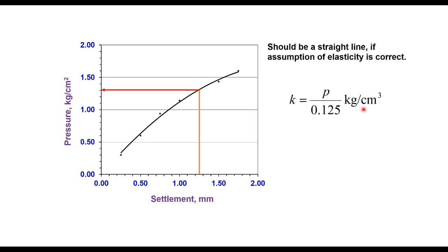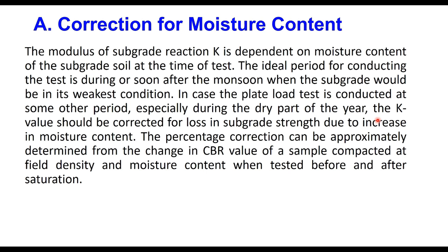Then we calculate the value of k using this equation: pressure divided by 0.125, in kg per centimeter cube. If you are taking the pressure in MPa, then it will be in MPa per meter.